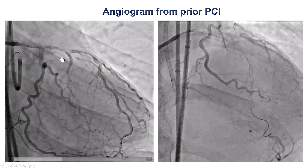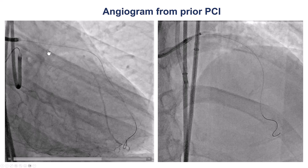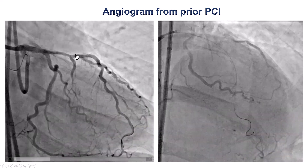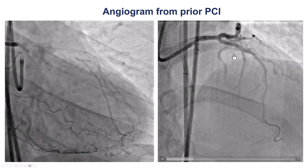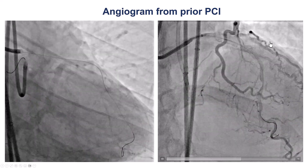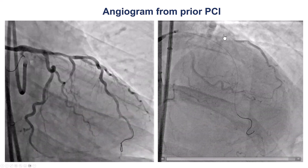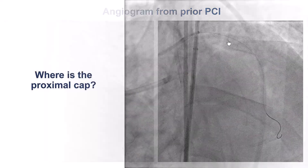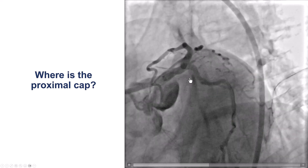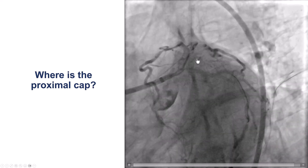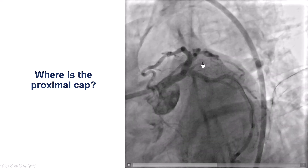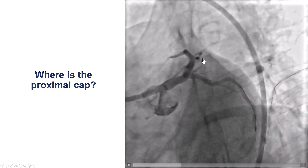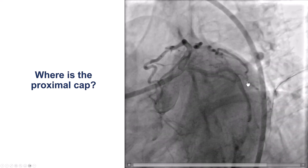However, the origin proximally was not entirely clear. We can see here the circumflex, we can see the LAD — the origin of that branch seems to be unclear. And here we do see the occluded vessel reconstituted distally, but it's hard to understand where it is coming from proximally. This is the spider view, in which we do see a Ramos branch. However, it is unclear where exactly this is going and if this is the one that is connecting with the occluded segment.